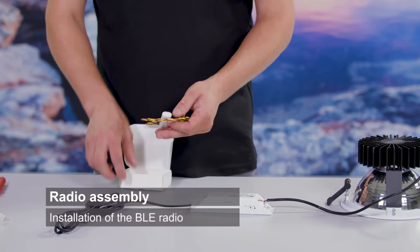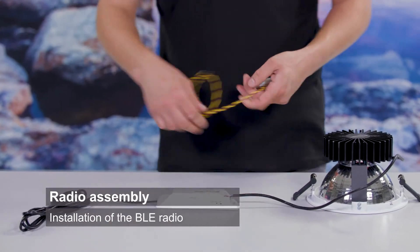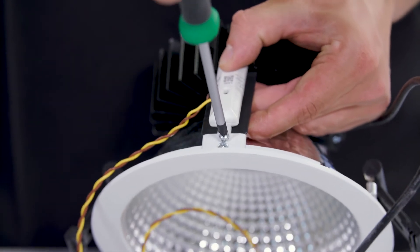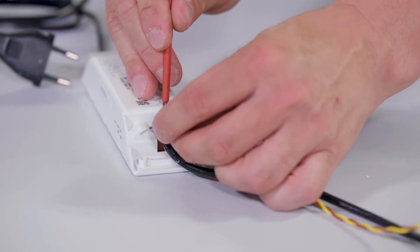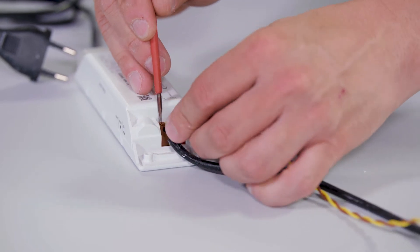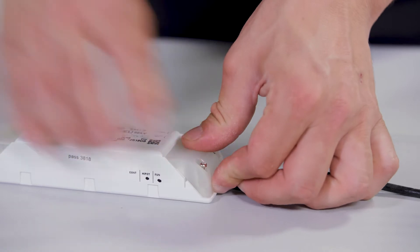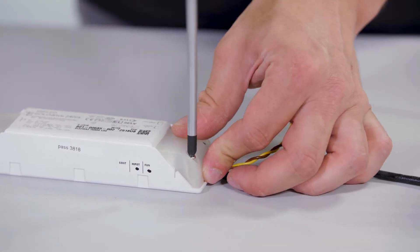Unpack the LEDCODE BLE radio, mount it on the downlight, and connect the LEDCODE BLE radio to the LED driver. At the end, mount the second end cap at the LED driver.